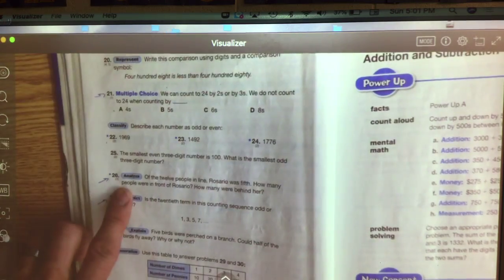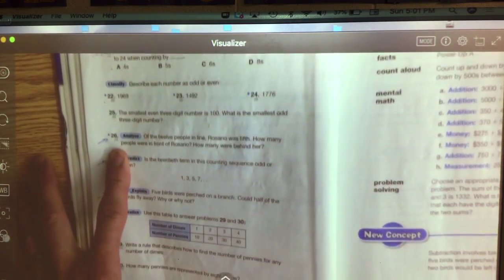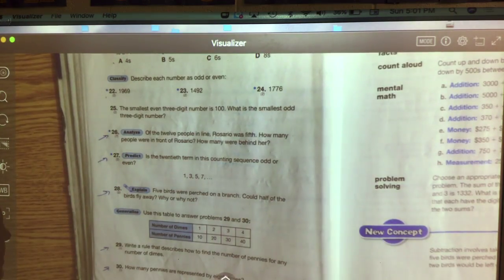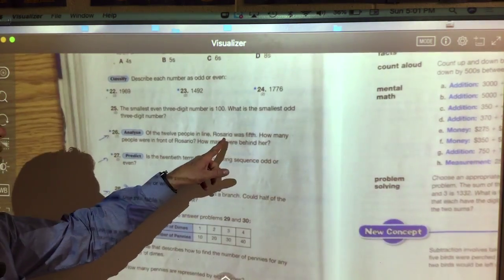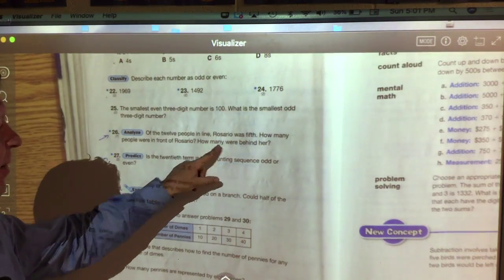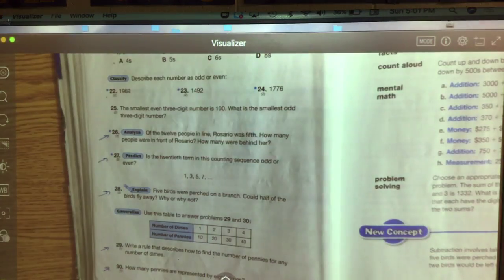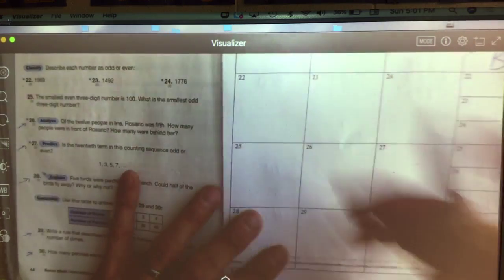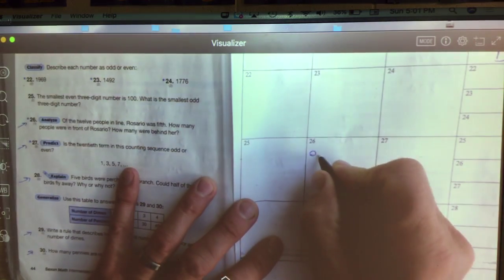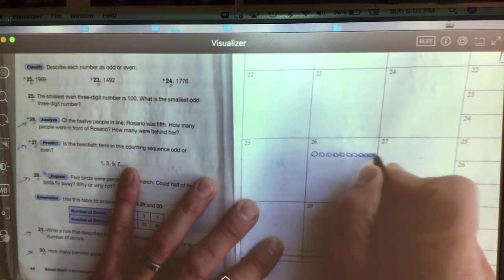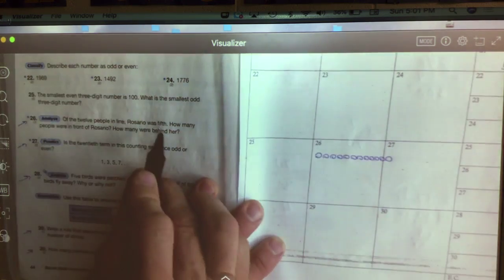Alright, take a look at number 26, jumping down to 26. It says if 12 people are in line, Rosario was 5th. How many people are in front? How many people are behind? This is our ordinal number from today. So remember, we've got to draw these people out. I'm going to do it with little circles: 1, 2, 3, 4, 5, 6, 7, 8, 9, 10, 11, 12. And Rosario was 5th. 1, 2, 3, 4.